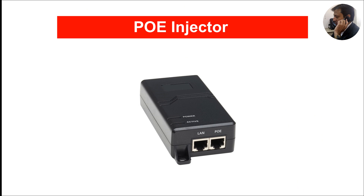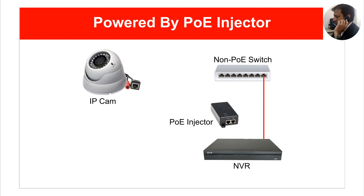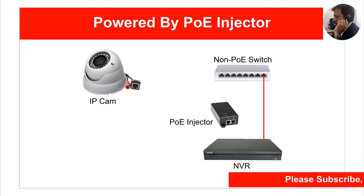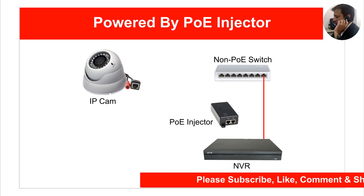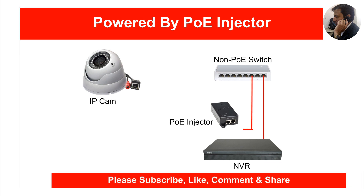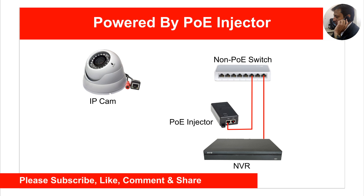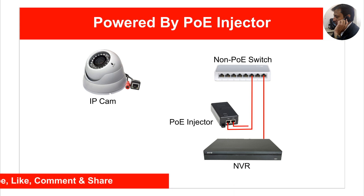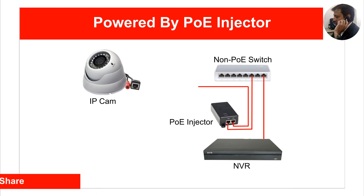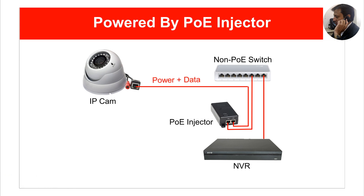The last method we will discuss is the use of a PoE injector. A PoE injector is similar to a PoE splitter, but the only difference is that the injector has an inbuilt DC power source. Similar to the PoE splitter, it also combines power and data to enable it to run on a single ethernet cable, eliminating the need to run an additional cable to provide power to the camera.